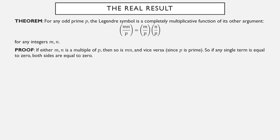Suppose one of the two numbers m or n is actually divisible by p. Well, then so would be the product mn, and vice versa: if p is a factor of mn, since p is prime it must be a factor of one of the two numbers or possibly both. In other words, if any one of these three Legendre symbol values is equal to zero, then p is a factor of one of m or n, which makes it a factor of mn. So if one symbol is zero, so is the left side, and both sides equal zero. Everything checks out in this divisibility case.